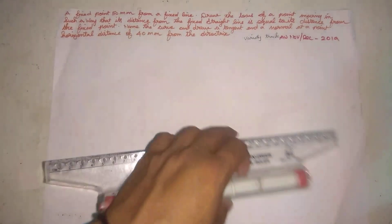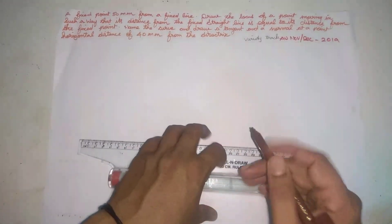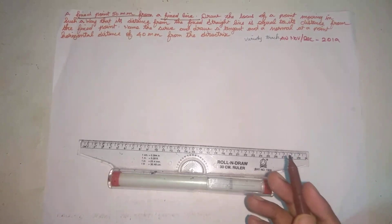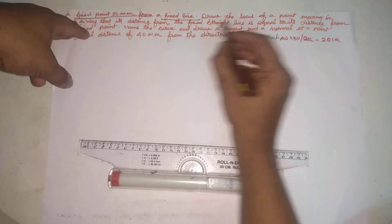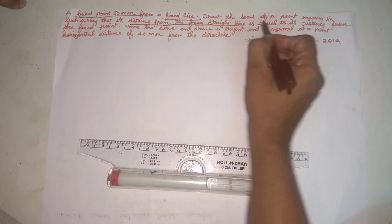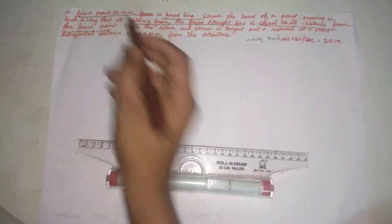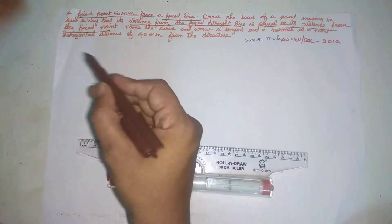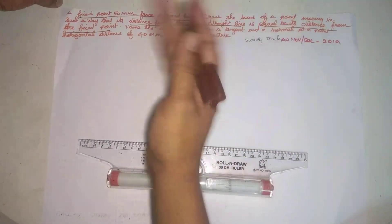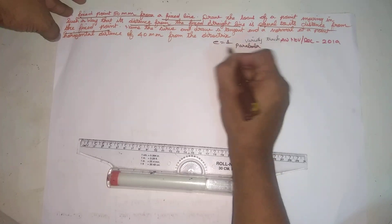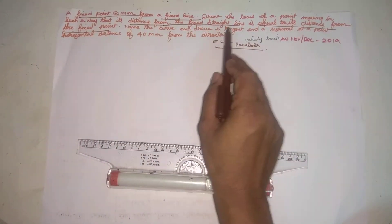Hi friends, welcome to our ready track. I am here in November/December 2019. The first question: a fixed point is 50mm from a fixed line. Find the locus of a point moving in such a way that its distance from the fixed straight line is equal to its distance from the fixed point.